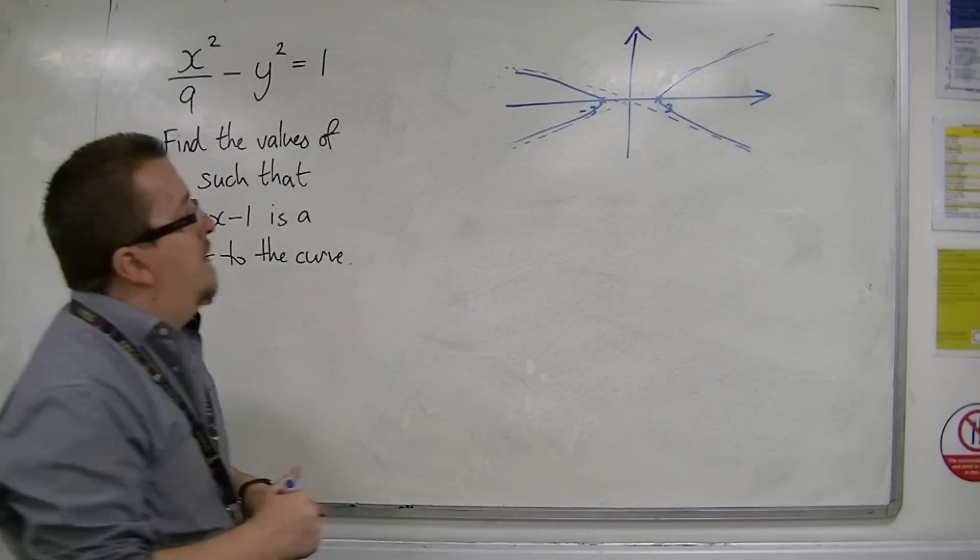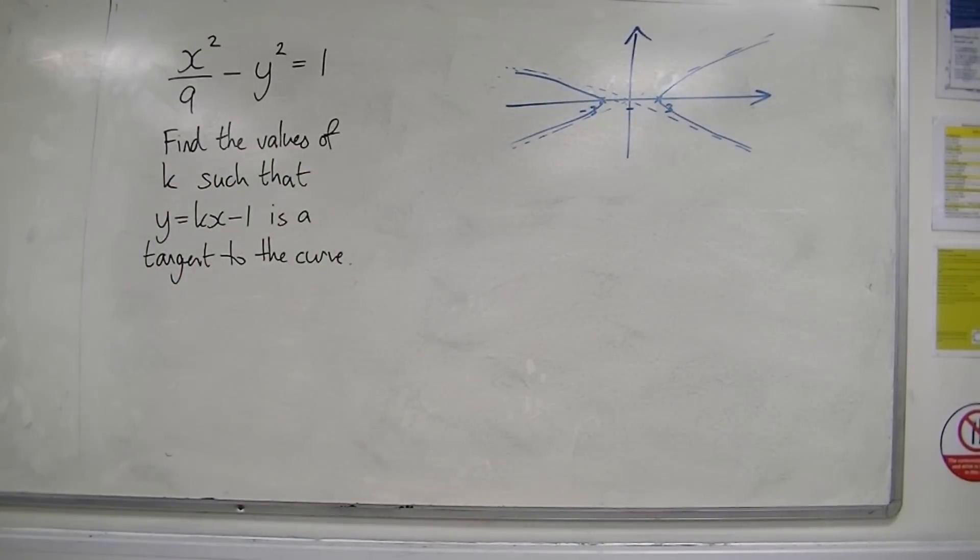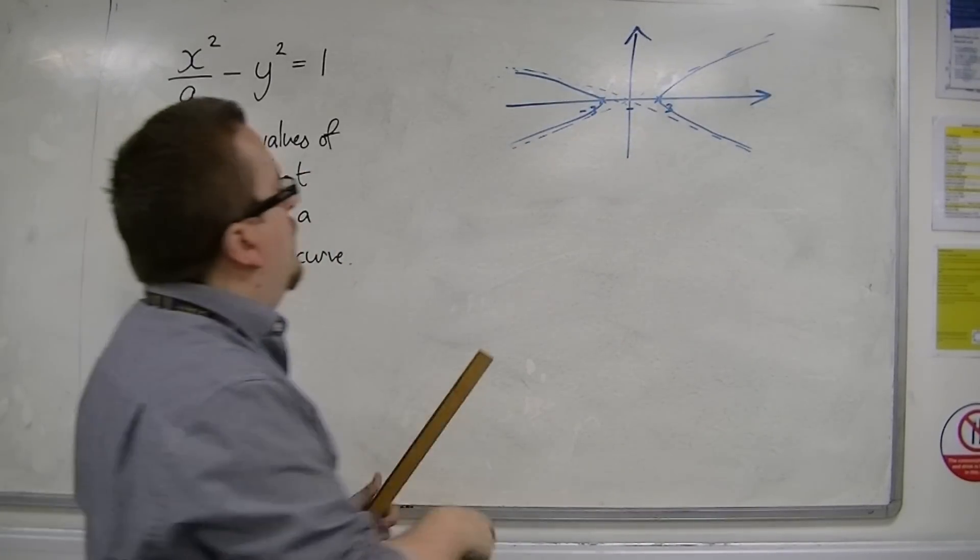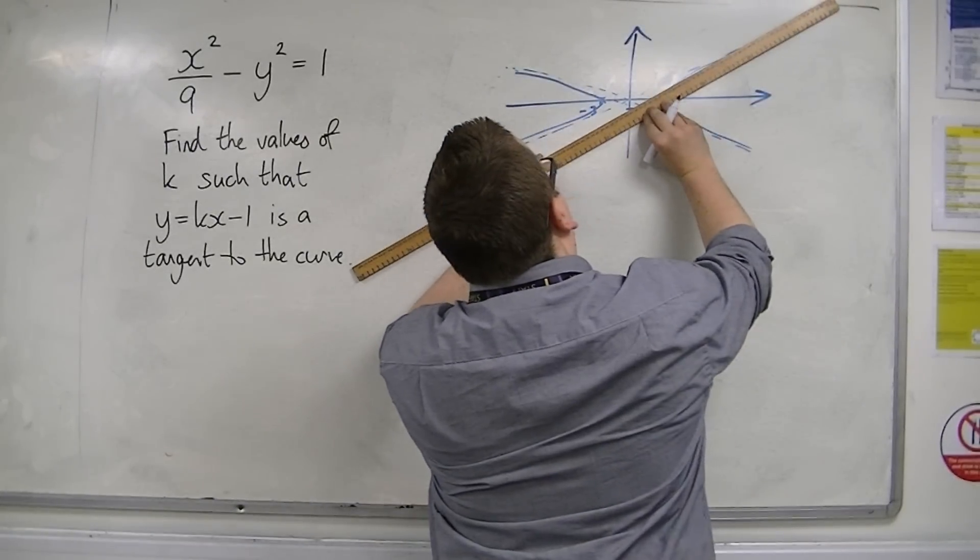Now, y is equal to kx minus 1 is the straight line equation going through minus 1 on the y-axis.